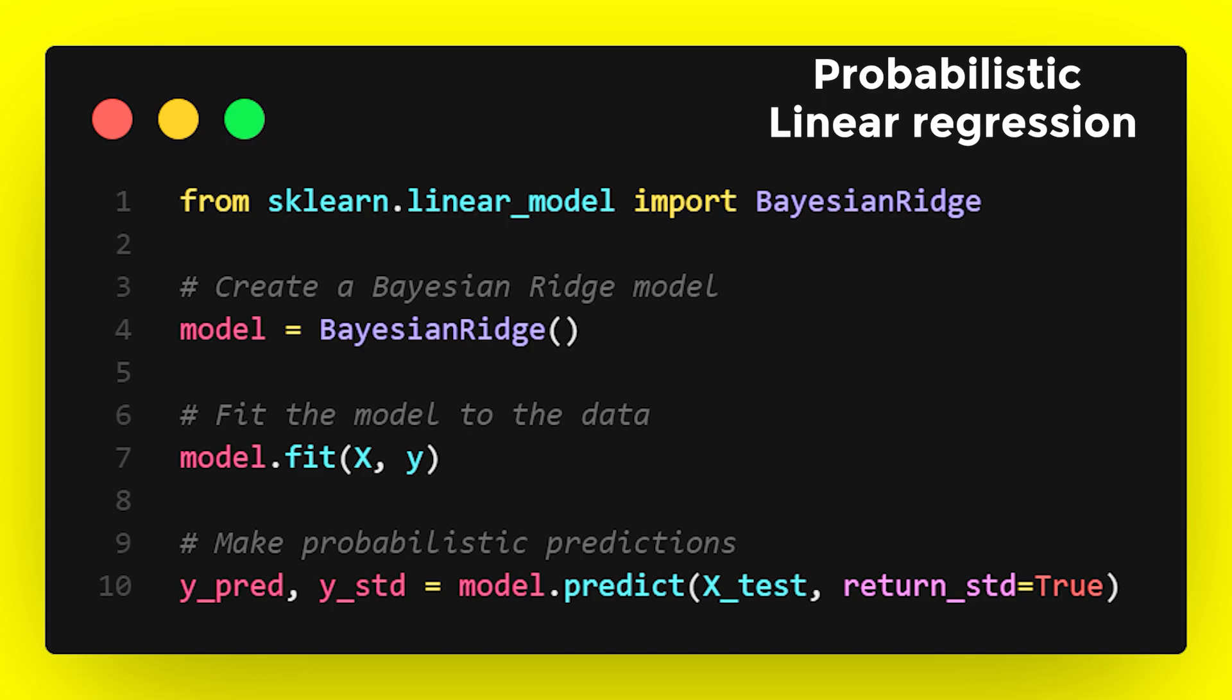I'm using the BayesianRidge module of sklearn. In the final line, we can see that we make probabilistic predictions using the predict method with the return_std argument set to true. This returns both the predicted value y_pred and the standard deviation y_std of the prediction, which represents uncertainty in the model's prediction.